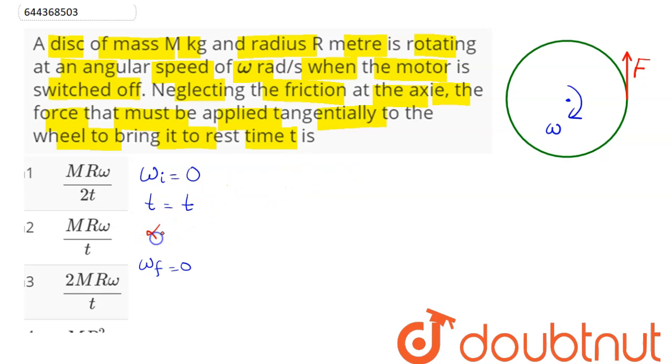We can find alpha. Omega final equals omega initial plus alpha times t. Now omega final is 0, omega initial is ω, so 0 = ω + αt. Hence alpha comes out to be -ω/t.